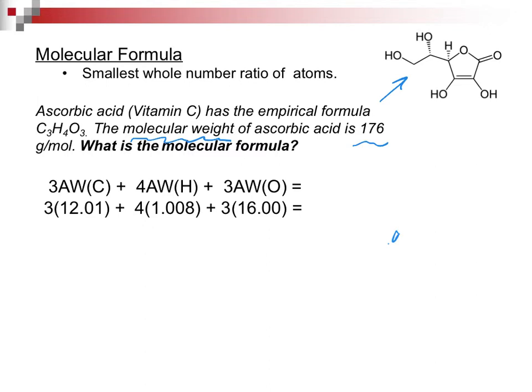Well, I kind of worked ahead and put down all the numbers I need to get started. I will take 3 times the number of carbons, giving me 36.03. I will take 4 times the number of hydrogens, giving me 4.032. And I will take 3 times the number of oxygen, which will be 48.00. When I add them together, I get 88.06 as the empirical formula weight.